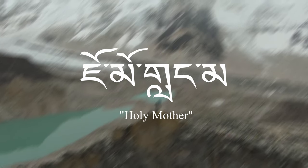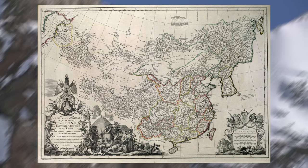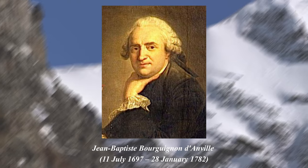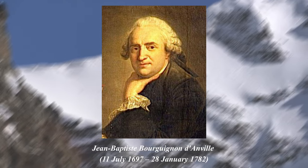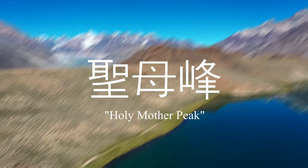The Tibetan name for Everest is Kami Lingma, meaning Holy Mother. The earliest recorded instance of this name, transcribed in Chinese, dates back to 1721 in the Kangxi Atlas, made during the reign of Emperor Kangxi of the Qing Dynasty. It later appeared on a 1733 map published in Paris by the French geographer D'Anville, based on the earlier map. Beyond Tibet, the official Chinese name for the mountain is Qomolangma, although other Chinese names were previously used, such as the name meaning Holy Mother Peak.